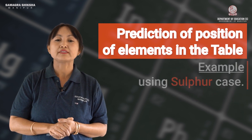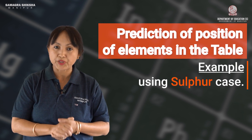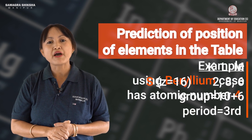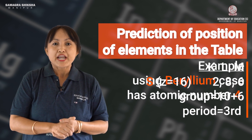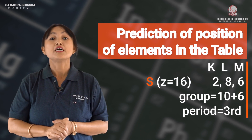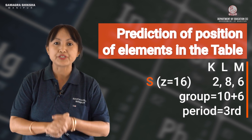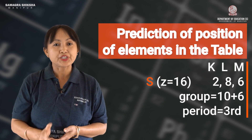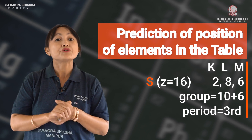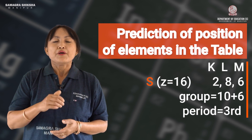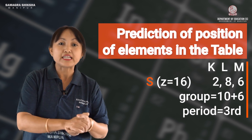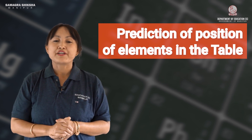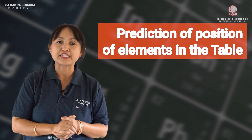For example, beryllium's electronic configuration is: first energy shell K has 2 electrons, and the outermost energy shell L has 2 electrons. The number of valence electrons is 2, so the group number of beryllium is 2. The number of energy shells is 2 — shells K and L — so beryllium belongs to the second period.